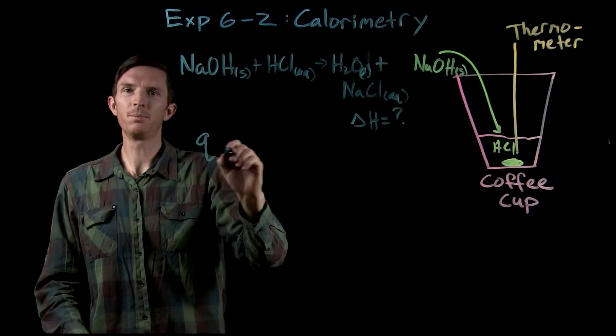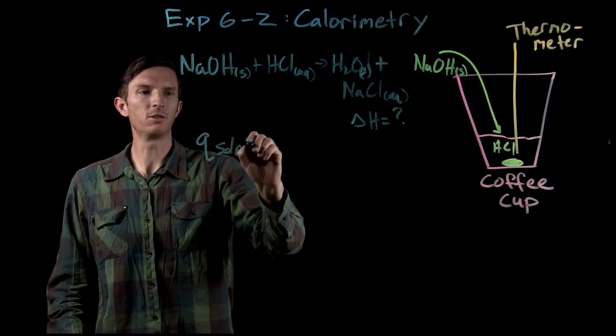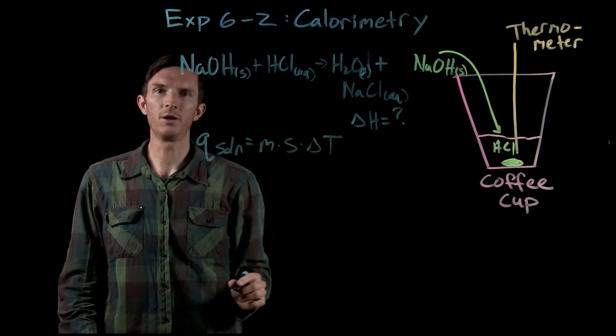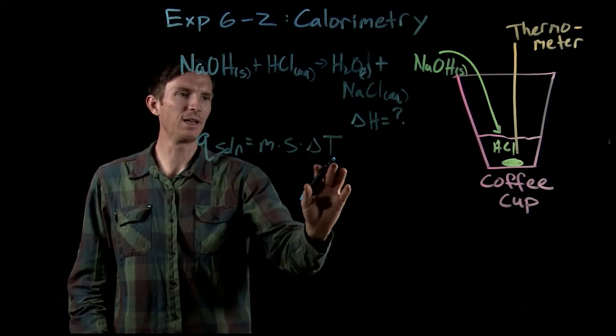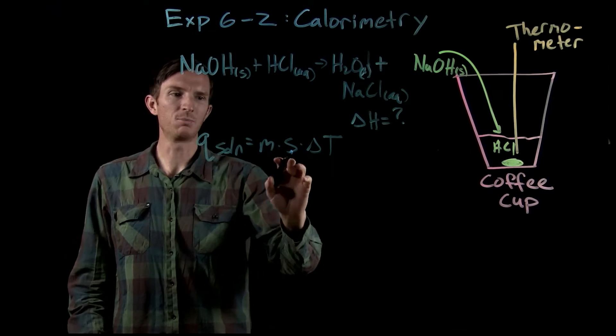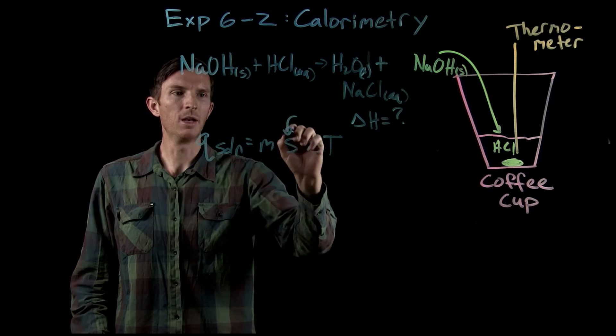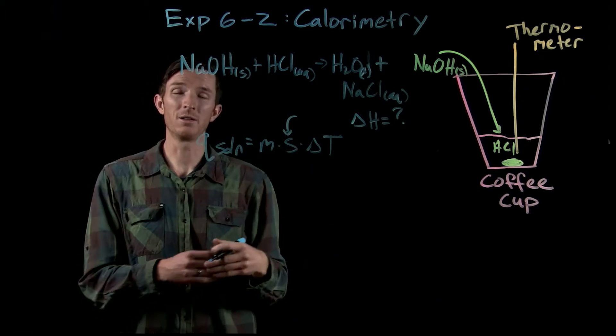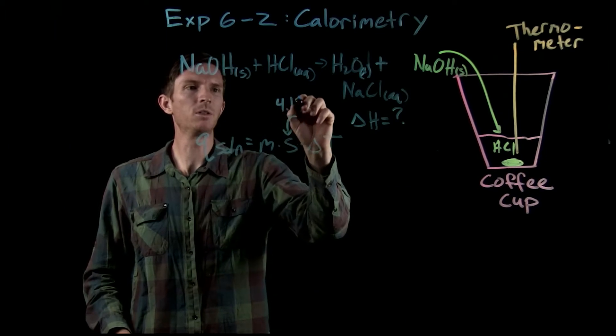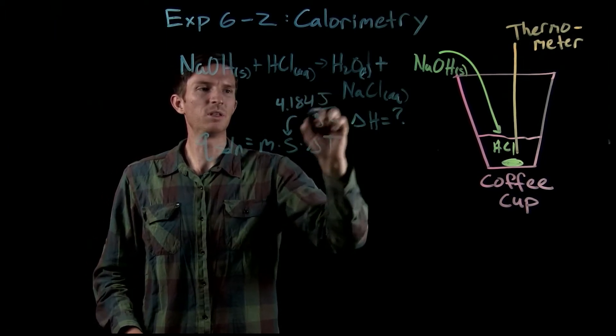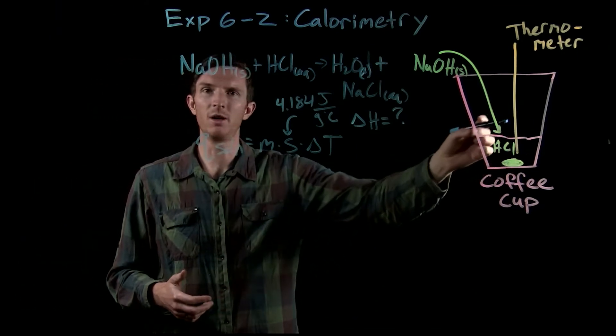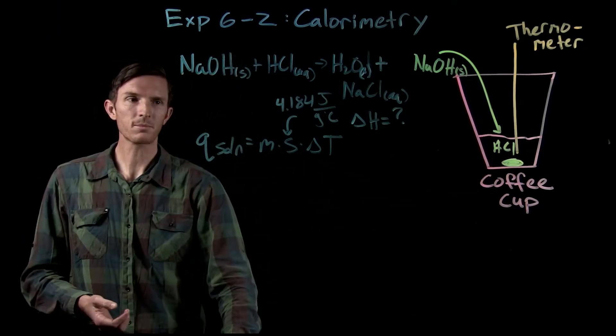Okay, so we're going to be able to calculate the Q of our solution based upon the fact that it's going to undergo a temperature change. And so we have to identify what this temperature change is, and we're going to have to look at the specific heat of our solution. Now we're going to be using water as our solvent. That's going to be the majority of the solution, so we're going to be able to use the specific heat of water because the majority of what was actually changing temperature in here is the water.